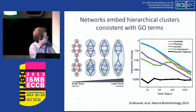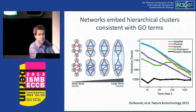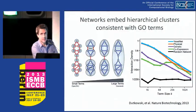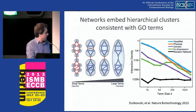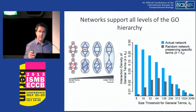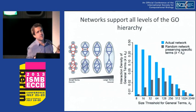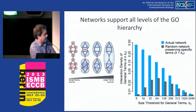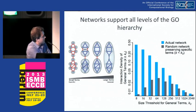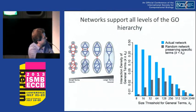If we permuted networks of the same size and degree distribution, we would not get anywhere close to the density of the real networks. One caveat is that because this is a hierarchy, small terms are part of larger terms, so you might hypothesize that the density of higher terms is due to the density of lower terms within them. We corrected for that by developing a random model that preserves degree distribution and also preserves components of any given size with a threshold, and we computed density for terms above that size.